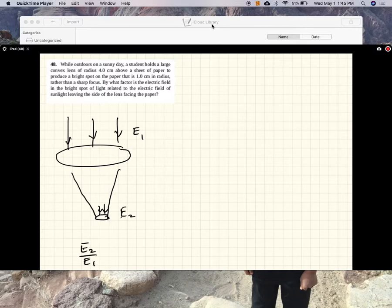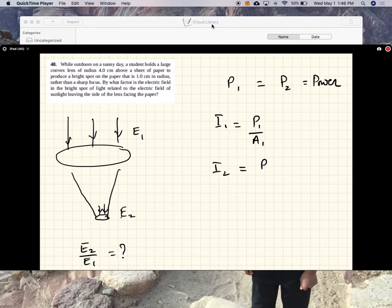So the energy passing per second here, this area, is equal to the energy per second there. So the power at point 1 and power at point 2 are the same. Power intensity I1 is P1 over A1, intensity I2 is P2 over A2 equal to P1 over A2.